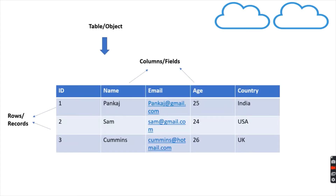So what is a database? A database is an organized collection of data, generally stored in the form of a table. For example, consider this table. We have columns over here and we have rows. Generally, a column represents the type of data, whereas a row represents the instance of data.